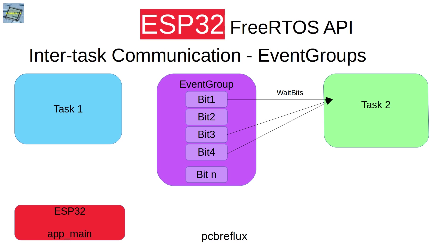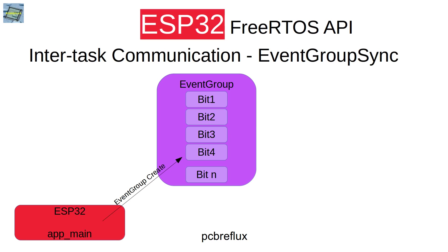If you play with the Wi-Fi example, there's an example of event group usage, because all your own tasks wait for the bit indicating the Wi-Fi connection to be set, and don't start before the Wi-Fi connection is established. The usage of event groups may become clearer if we look at the second example.